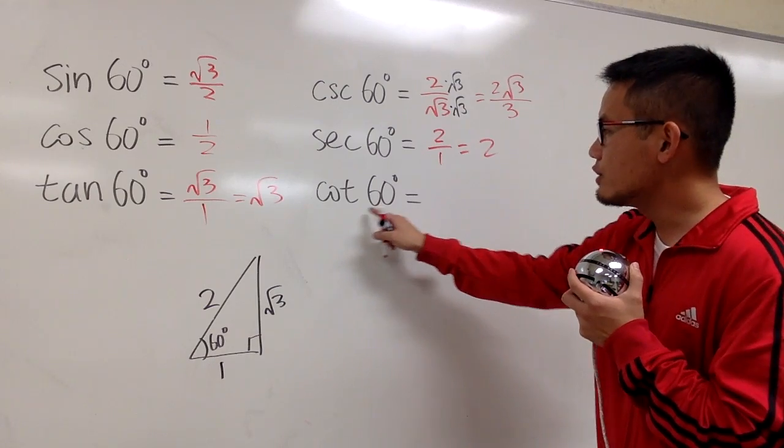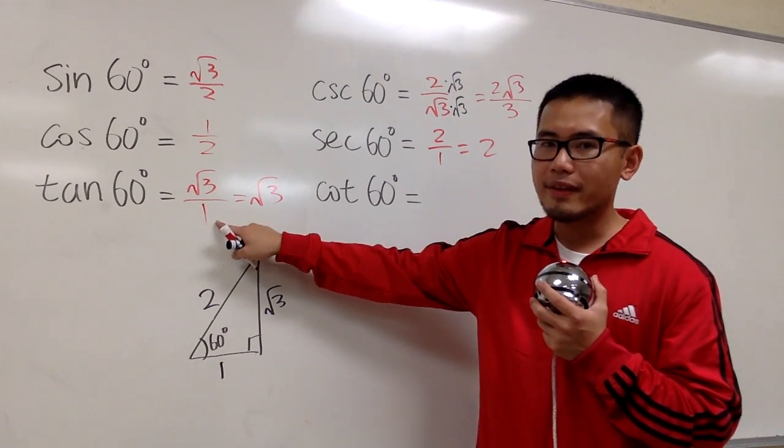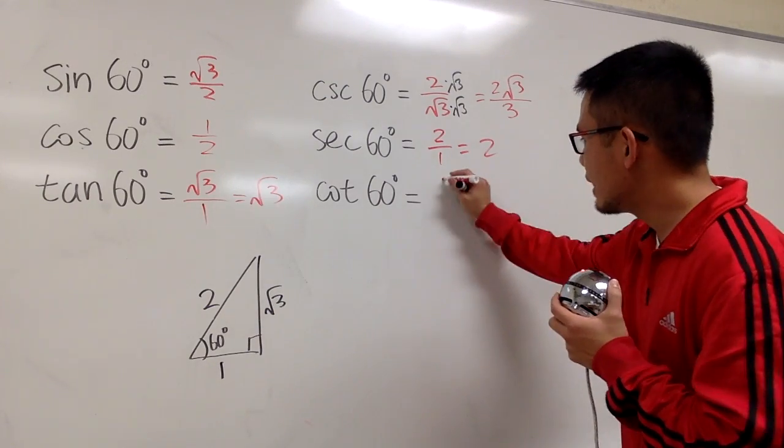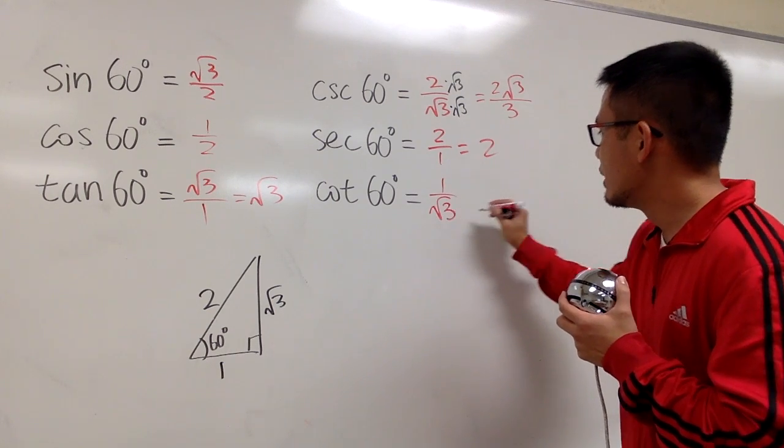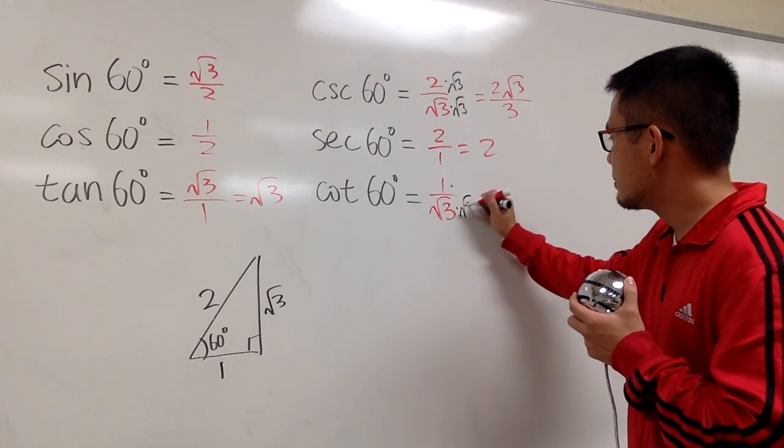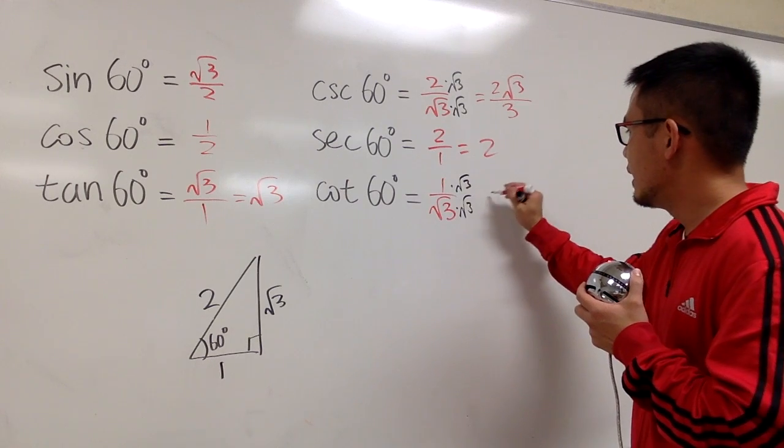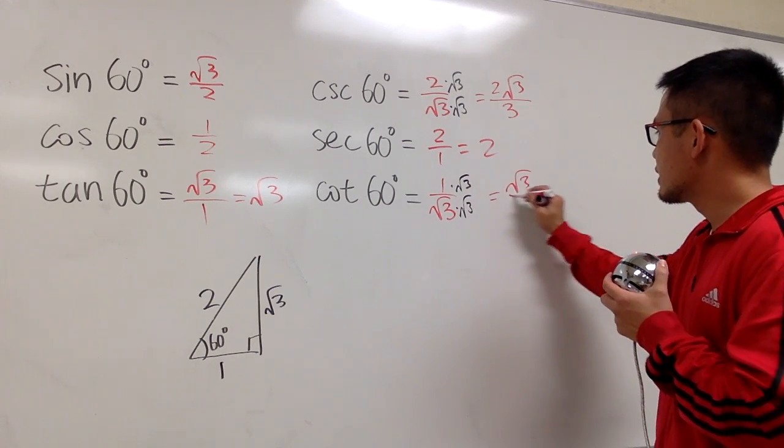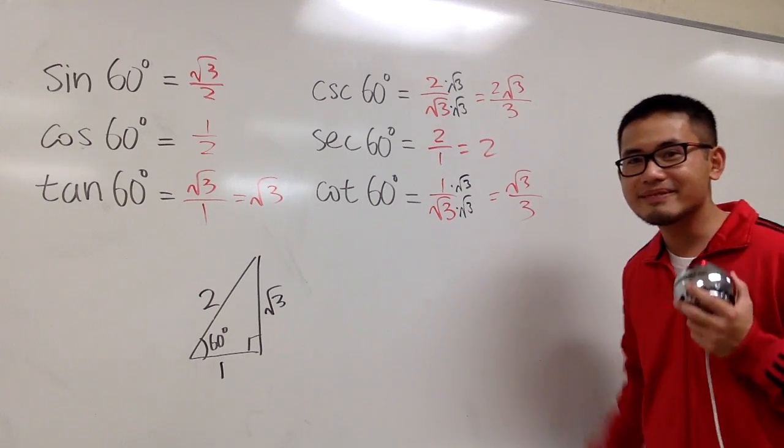And the last one, cotangent of 60 degrees, it will be 1 over square root of 3. So, let me just put this down and rationalize the denominator real fast. And we have square root of 3 on the top over a regular 3. And that's it.